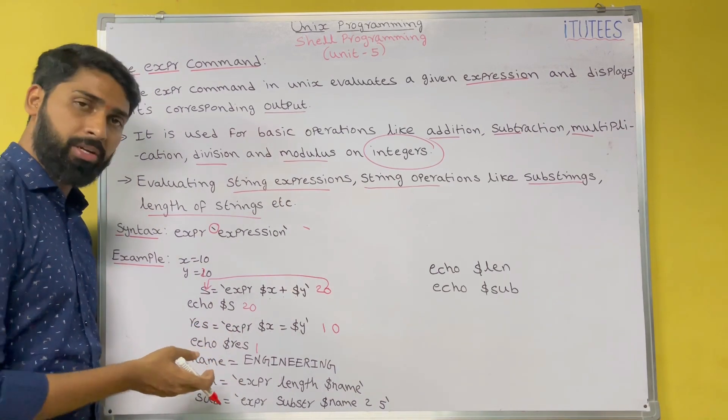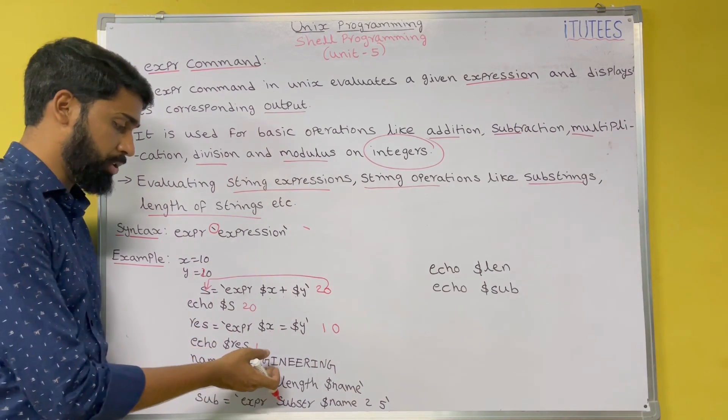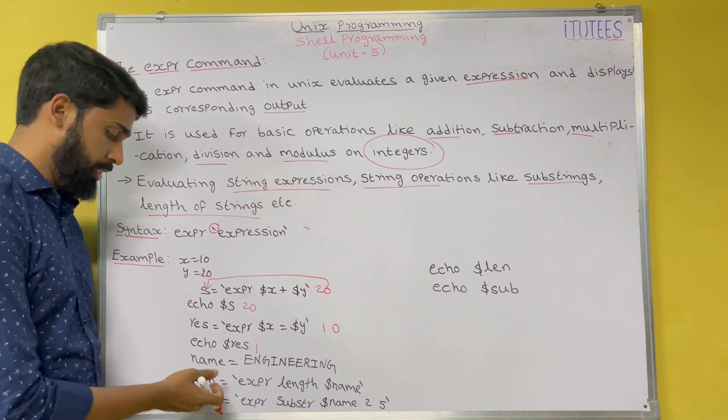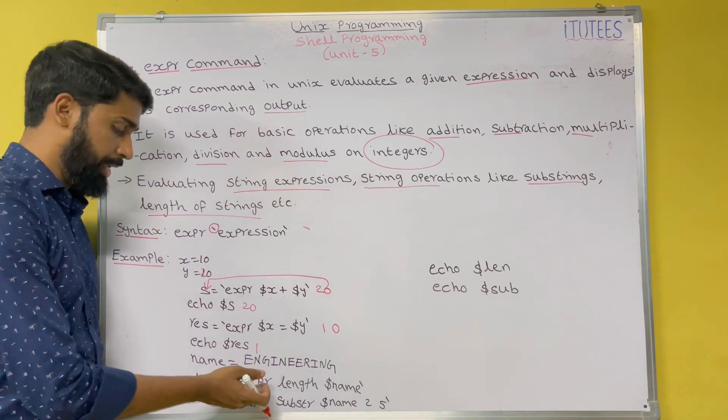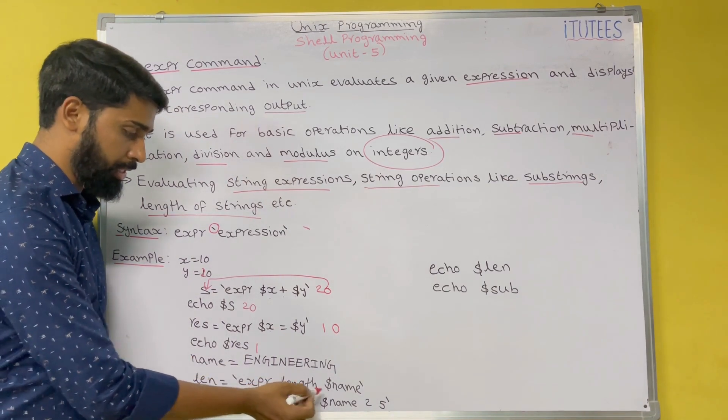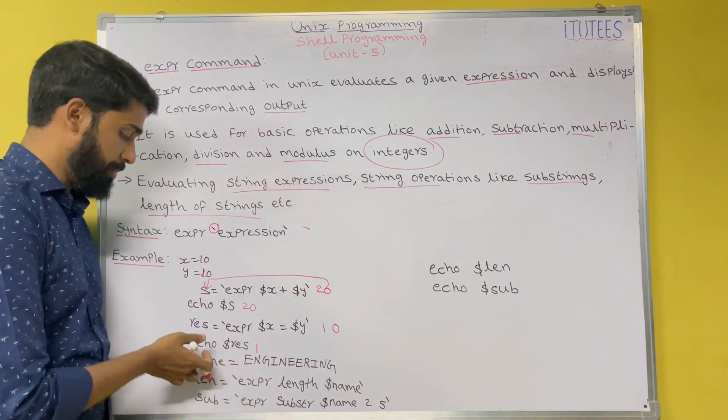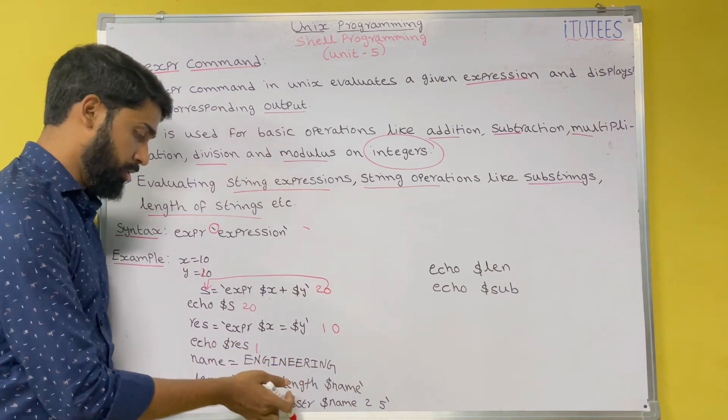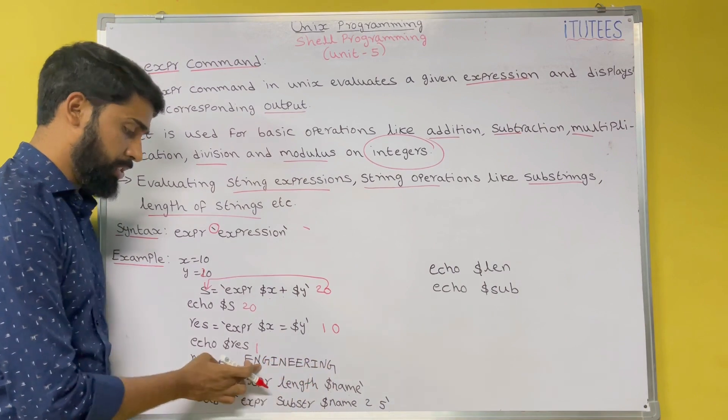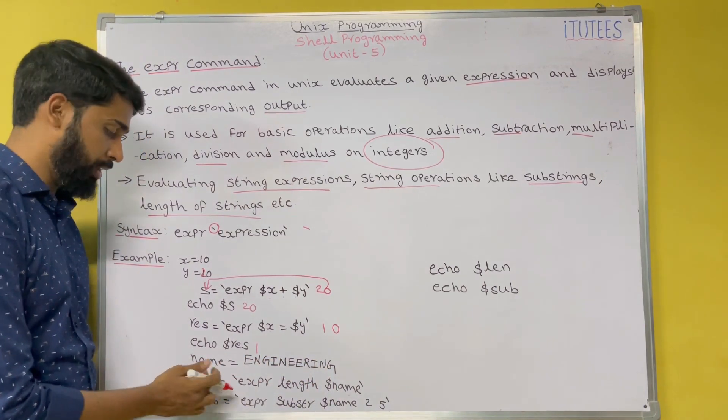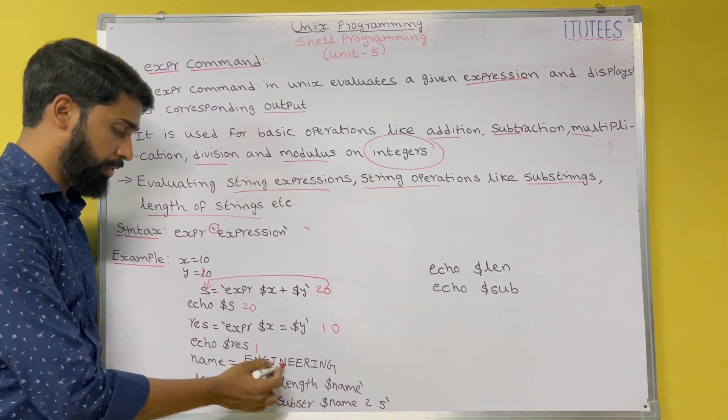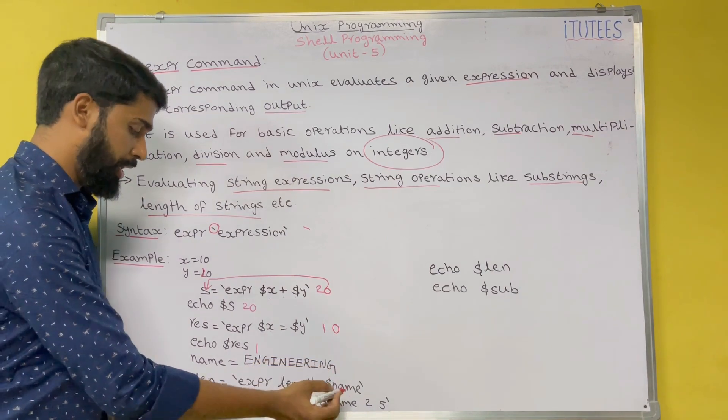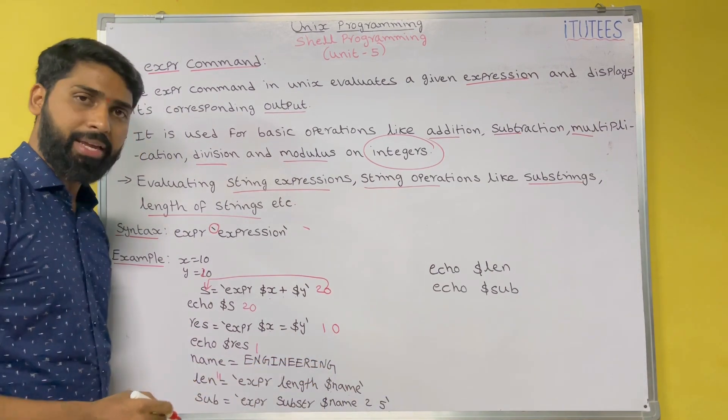And here I am taking one string: name equals to engineering. So length equals to expr length dollar name. What is the name here? Engineering. So the length of this string is stored in this len. What is the length? 1, 2, 3, 4, 5, 6, 7, 8, 9, 10, 11. So 11 is stored in len.